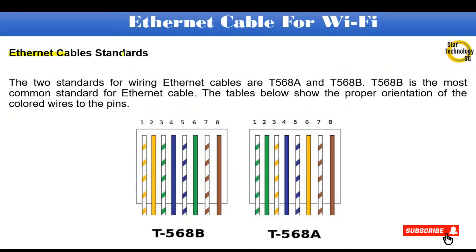Ethernet cable standards. The two standards for wiring Ethernet cables are T568A and T568B. T568B is the most common standard for Ethernet cable. The tables below show the proper orientation of the colored wires to the pins.